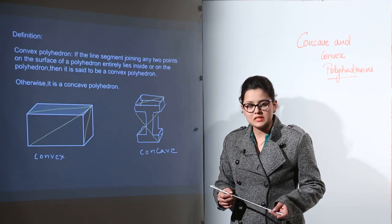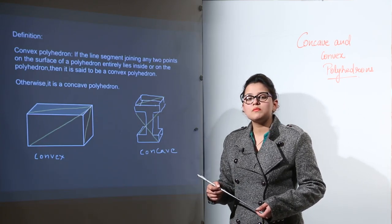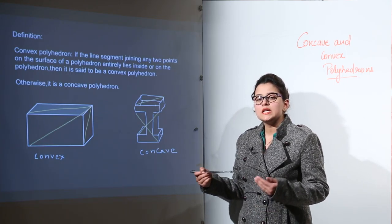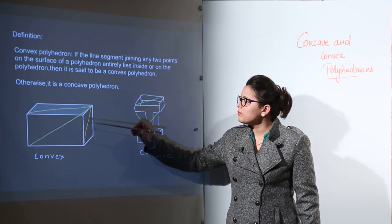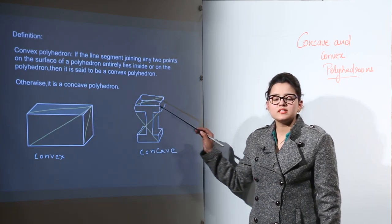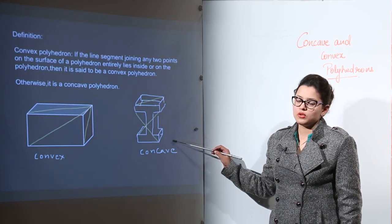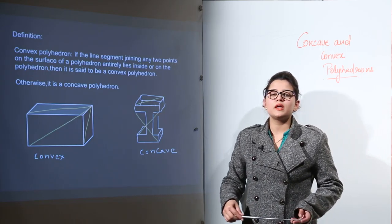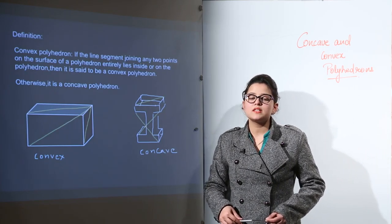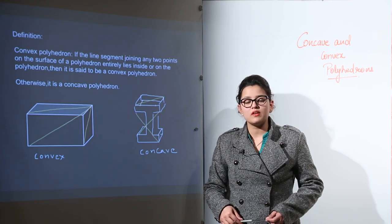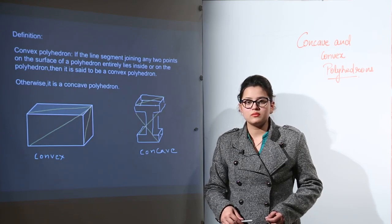This is the difference between concave and convex polyhedrons. Please be particular when you are observing any polyhedron. You must always check by making line segments joining vertices whether the line segments are lying inside or on the polyhedron, or lying outside the polyhedron. Depending on that, you can clearly classify them as convex or concave polyhedron.